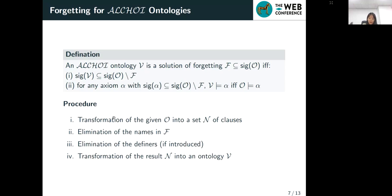The procedure of forgetting is like first we should transform the given ontology O into a set of clausal normal forms N. And then we will eliminate the concepts and role names in F. And then we will eliminate the definers introduced in the first step. And at last, we will transform the result N into an ontology V.